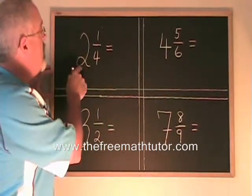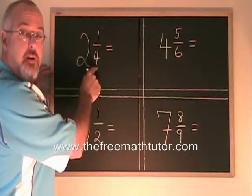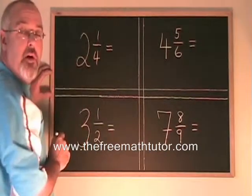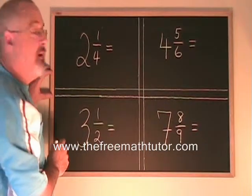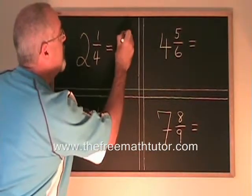Big number two times denominator four gives eight plus numerator one gives nine. Our new numerator is nine.